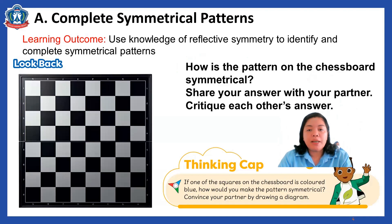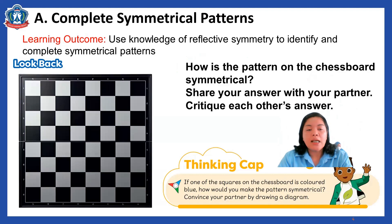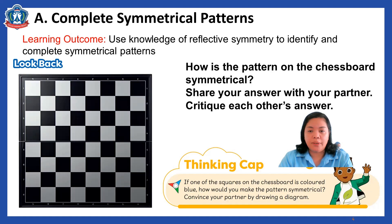This picture is a chessboard. How is the pattern on the chessboard symmetrical? How can we draw the line of symmetry to make this board symmetrical? We can draw the diagonal line of symmetry, the horizontal line, and the vertical line of symmetry. If you know, P5, you can share your answers during our class.